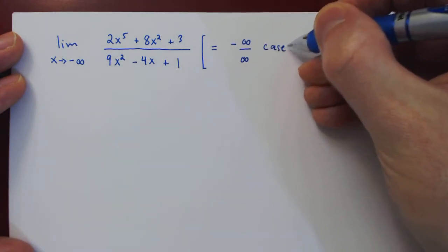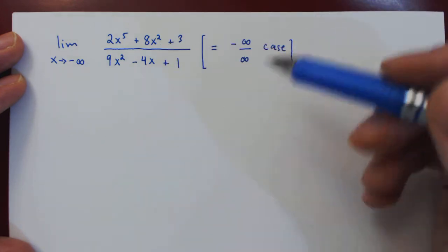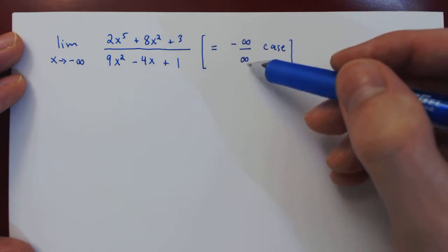So we have an indeterminate case, as we have a fraction where both numerator and denominator are getting larger and larger, one negative, the other positive.